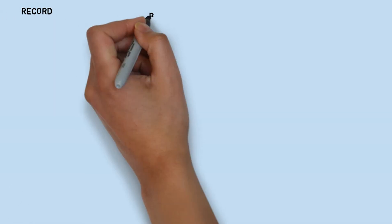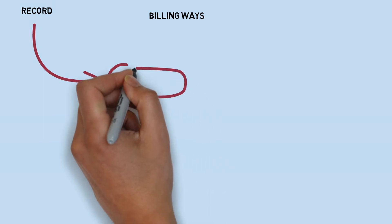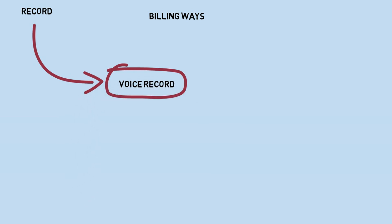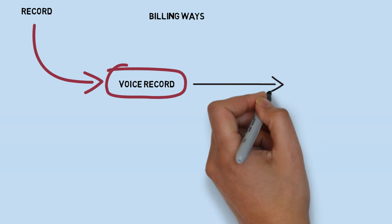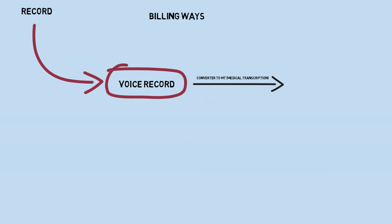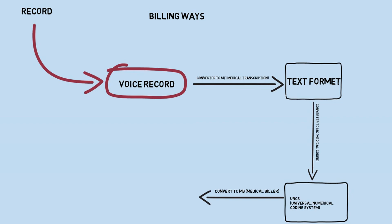The insurance company pays the doctor. The instruction from the insurance company to doctors is: if you want money for your treatment, just record a voice record and they will pay. Whatever workup is done on the patient, whatever treatment is given, everything requires a voice record. The voice record is converted into text format by a medical transcriptionist. The text format is converted into a universal numerical coding system by medical coders. From that, billers give the billing, and these bills are claimed to the doctor through the insurance company.